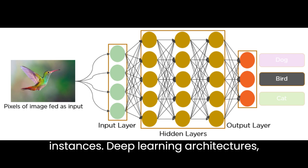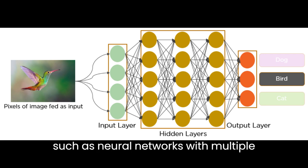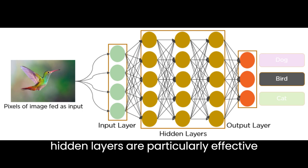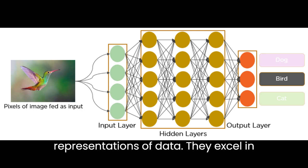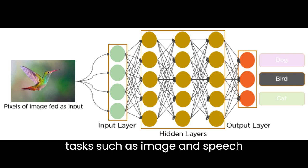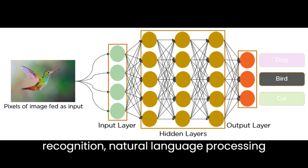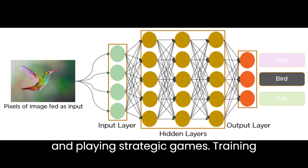Deep learning architectures, such as neural networks with multiple hidden layers, are particularly effective at automatically learning hierarchical representations of data. They excel in tasks such as image and speech recognition, natural language processing, and playing strategic games.